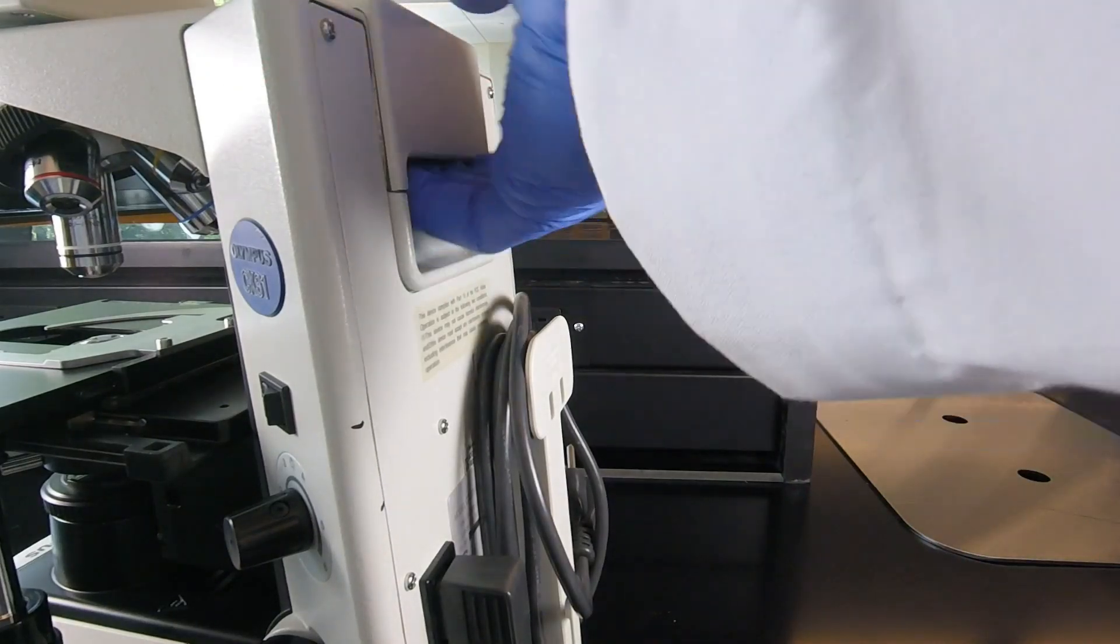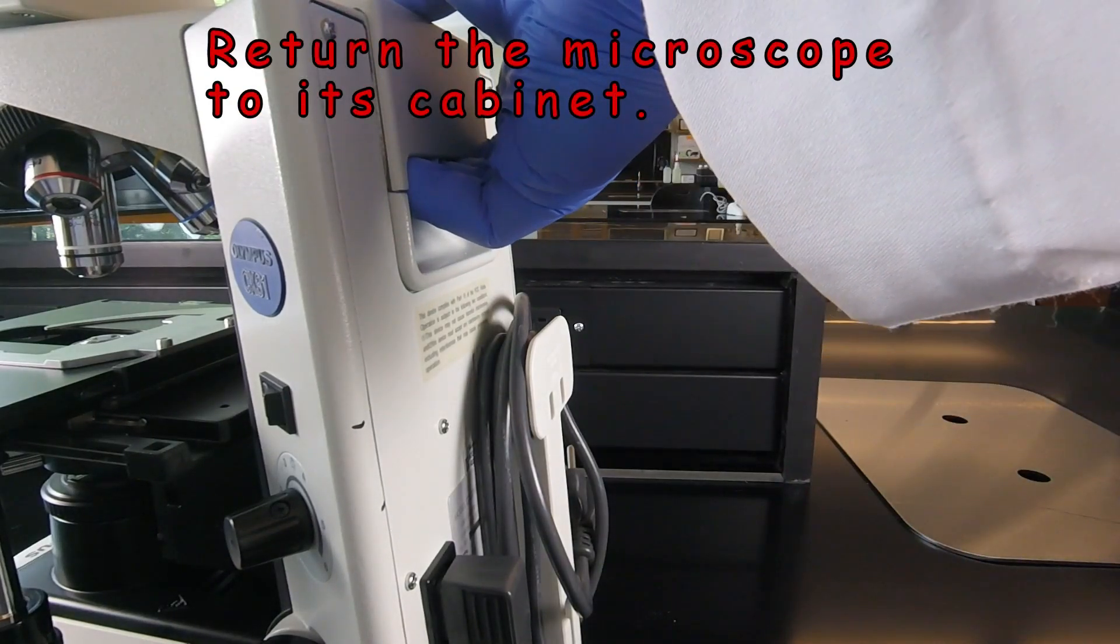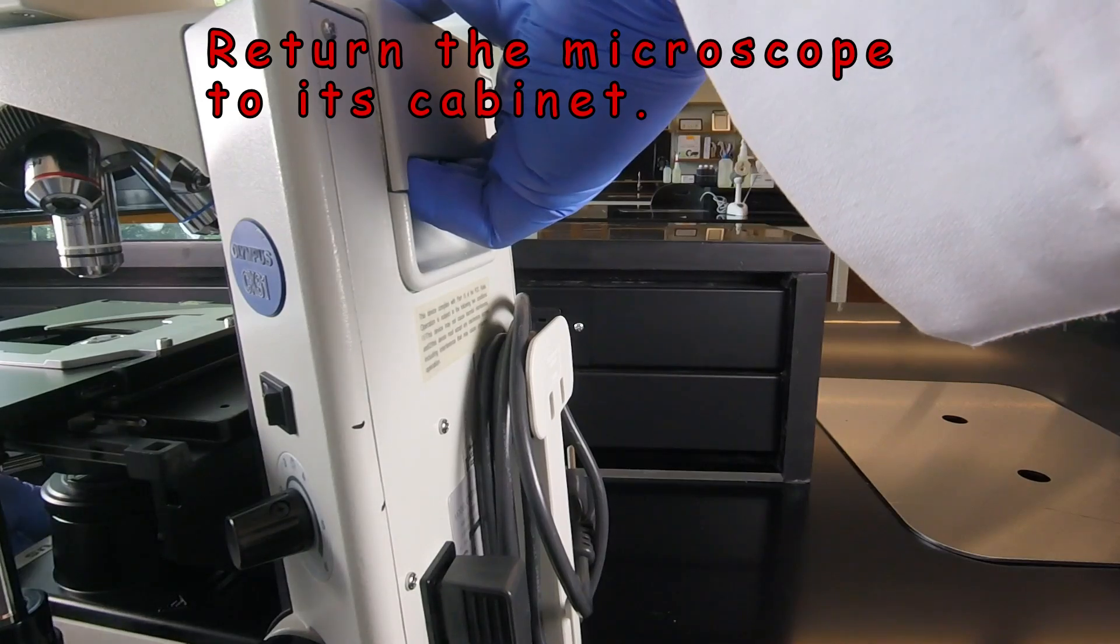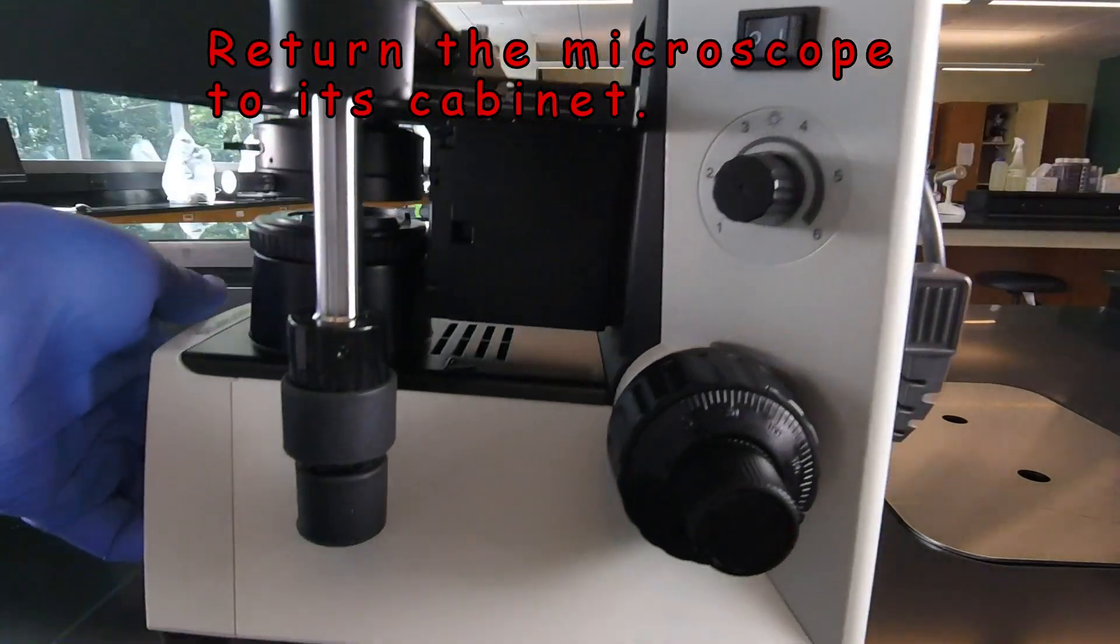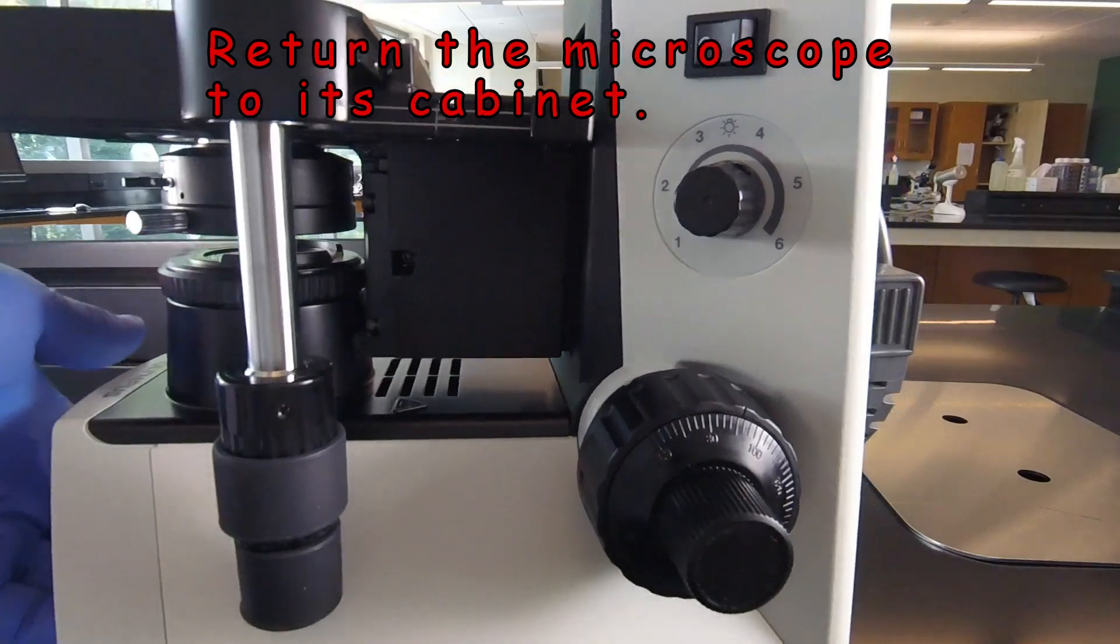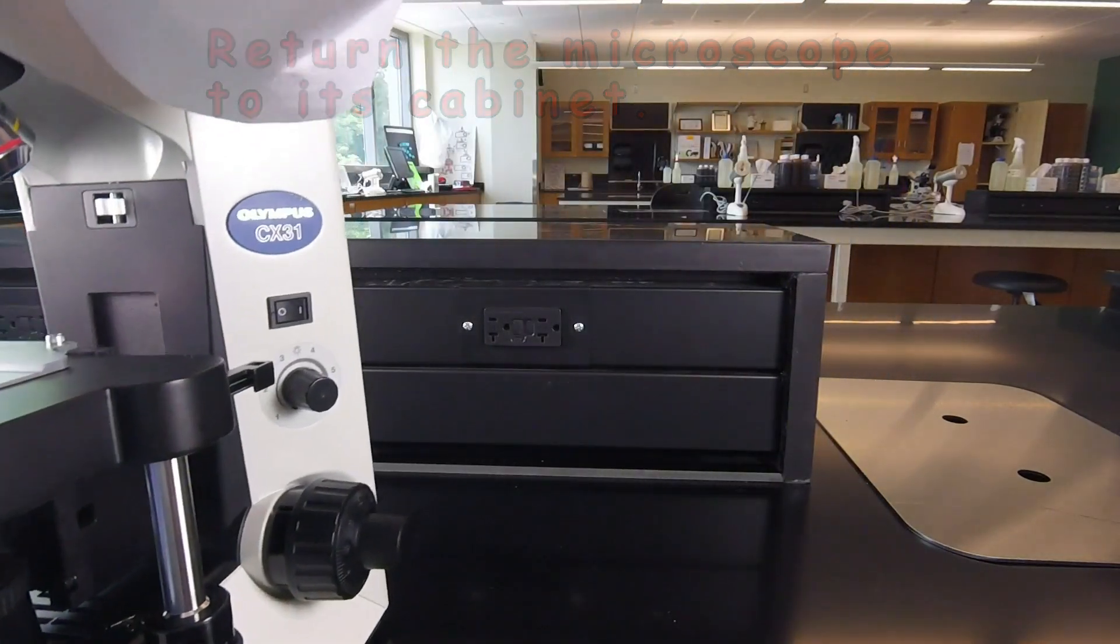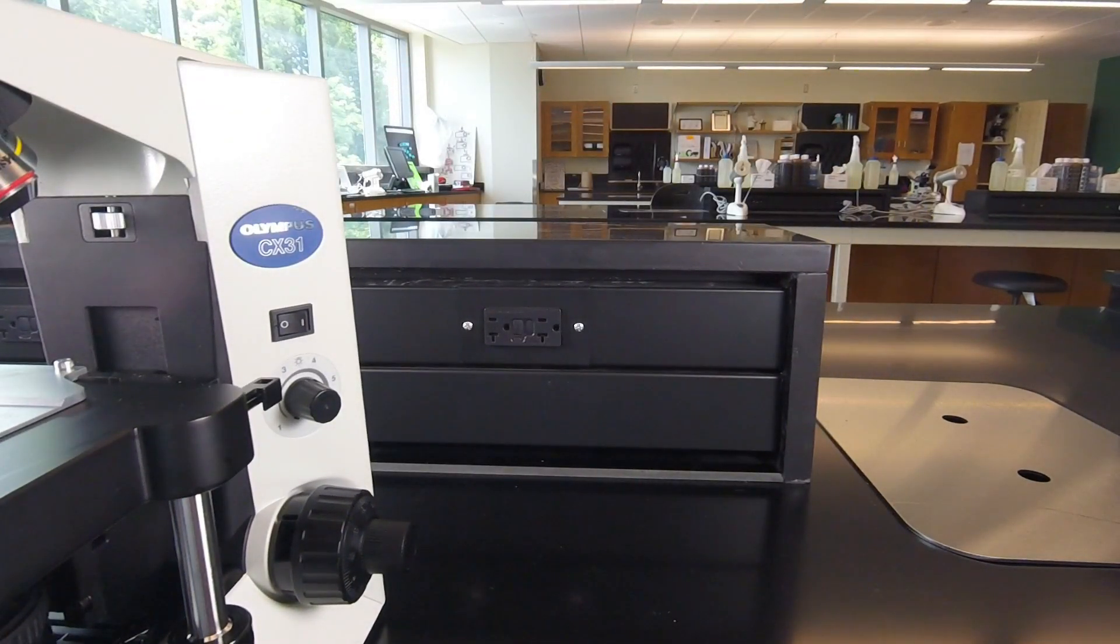And we're going to then tuck it in so that it doesn't come loose. Then of course we can grab the top of the scope with one hand, and grab under the bottom of the scope with the other, and use that to lift the scope and put it back away in the cabinet, so that the eyepieces are facing you.